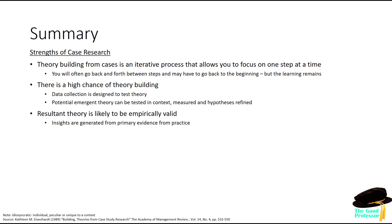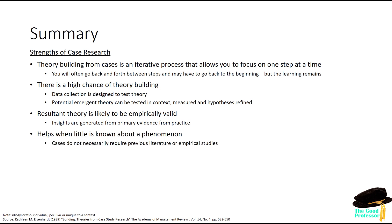The resultant theory is likely to be empirically valid because the insights are generated from your primary evidence — often from practice or from secondary data. It is empirically valid because it's theoretically driven. This approach also helps us when little is known about a phenomenon. Cases do not necessarily require previous literature or empirical studies, though I always caution against not having a thorough literature review, particularly for a PhD — it's very high risk to go that way. If you've got a thorough literature review, you've developed instruments, tools, frameworks that you want to test, a case study is a great way of doing that. Then you can really understand where the gaps are, and they might not be where you initially thought they were — you've got this flexibility to say: the gap's there, not where I thought.